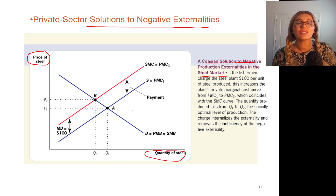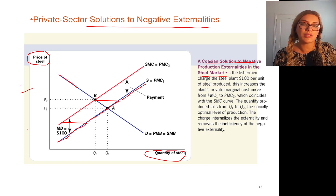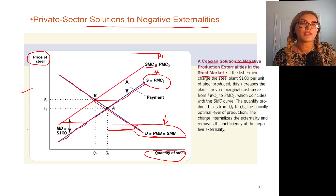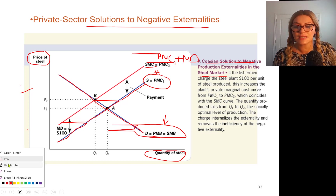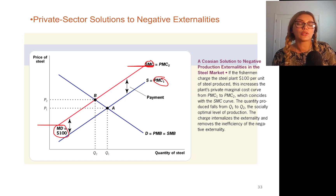Per quantity of steel produced, it was causing a hundred dollars per unit of steel produced. We started with private marginal cost — the supply, which is the cost to the steel company — and private marginal benefit, which is society's benefit from steel production, demand, also equal to social marginal benefit. Because there's a production externality and no consumption externality, social marginal cost is not equal to private marginal cost. It equals private marginal cost plus the marginal damage these companies are causing. The distance between the social marginal cost and private marginal cost curves is the marginal damage — the damage to fishermen per unit of steel produced.